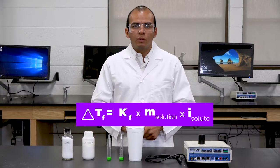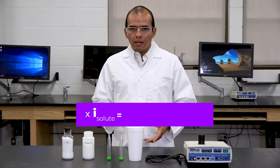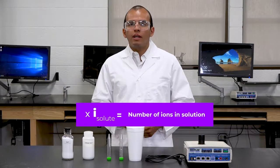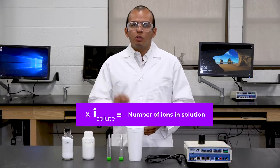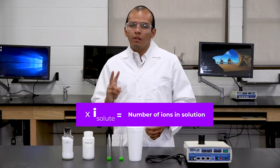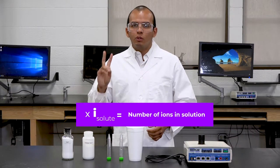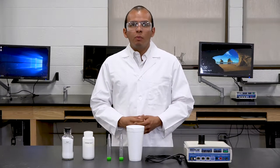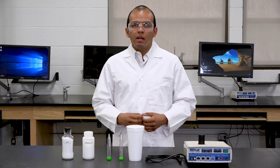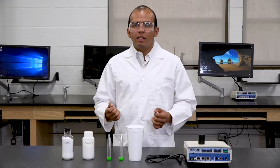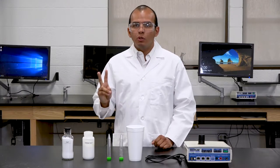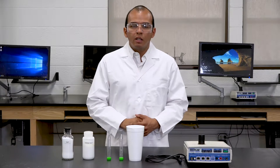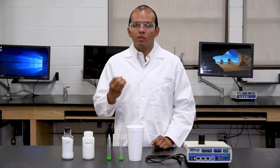The van't Hoff factor, i, equals the number of ions found in your solution. For example, sodium chloride dissolves in water and produces two ions — one sodium ion and one chloride ion — so its van't Hoff factor is two. Calcium chloride produces three ions in solution: one calcium ion with a +2 charge and two chloride ions with a −1 charge each, giving a van't Hoff factor of three.